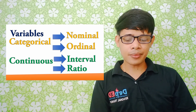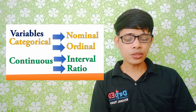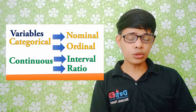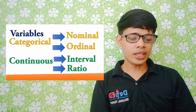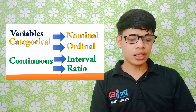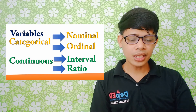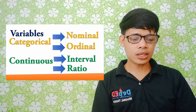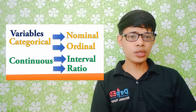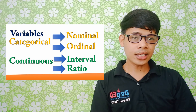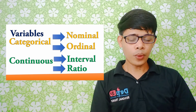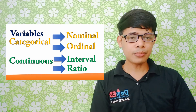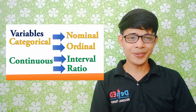Let us summarize. We talked about other types of variables: categorical and continuous. Categorical variables can be classified into nominal and ordinal. When it is nominal, you are only naming or labeling; in ordinal, you are naming or labeling but it must observe certain order or rank. For continuous variables, we have interval and ratio. For interval, you have measured values but you must consider that it has no true zero. For ratio, it has the same characteristics as interval variables, but the only difference is that it has a true zero value. That's all for today. Thank you.